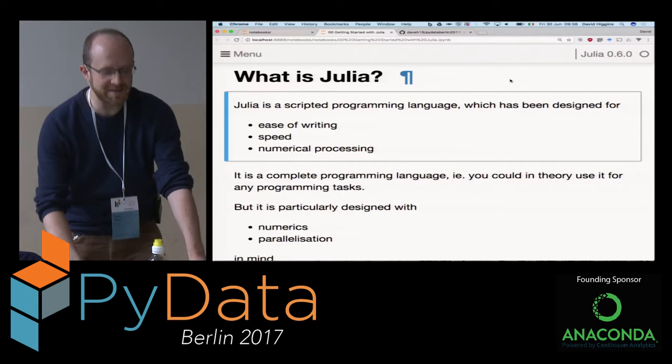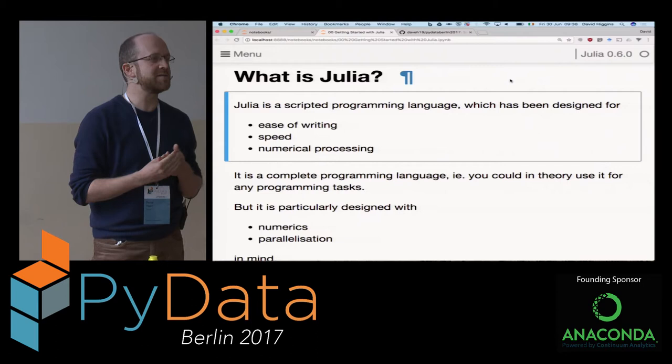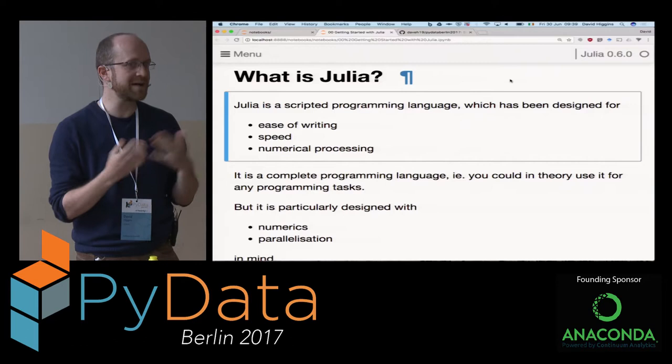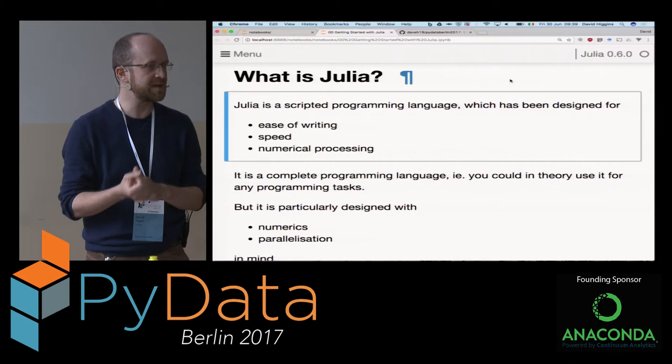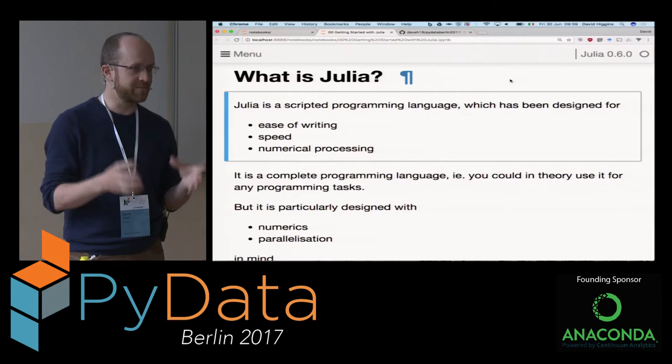So Julia - what is it? It's a scripted programming language. We're assuming you have some kind of Python knowledge and you're a data scientist, something like that. The big selling points are that it's easy to write, like Python. It's fast, and it's been designed from the ground up for numerical processing. Python was not designed around numerics - you need to use libraries like NumPy in order to do numerics properly in Python.